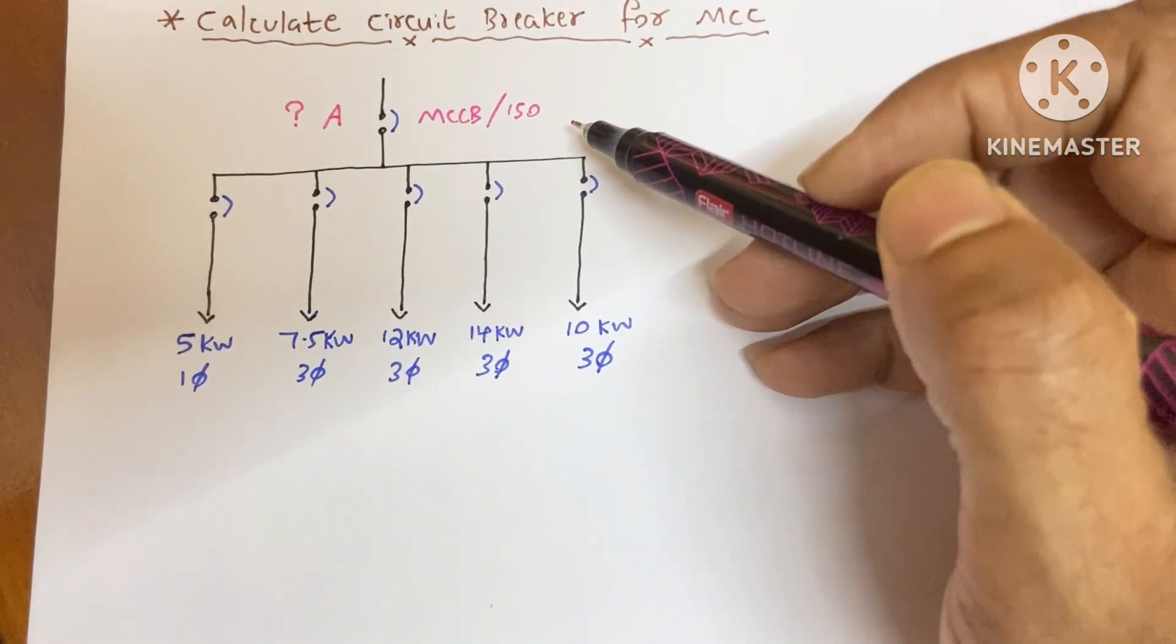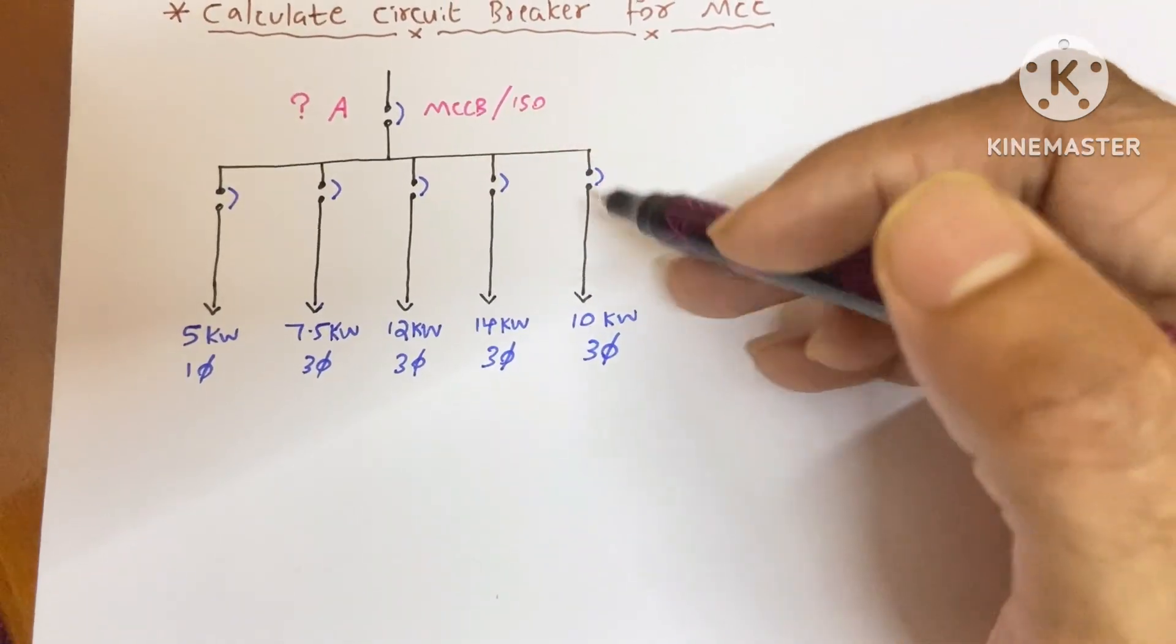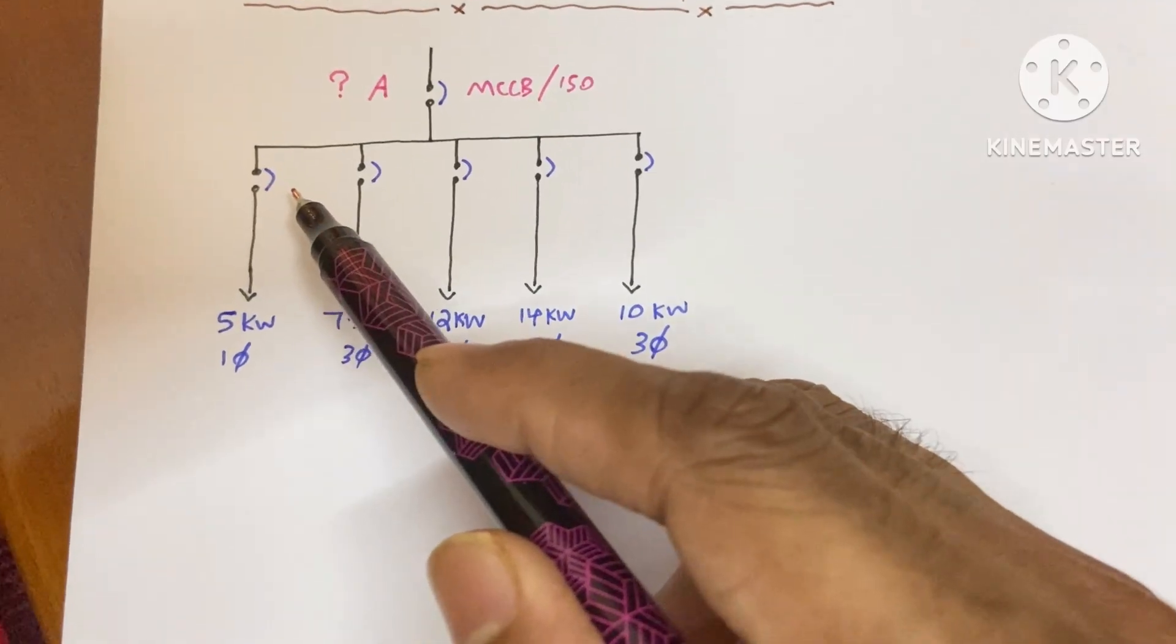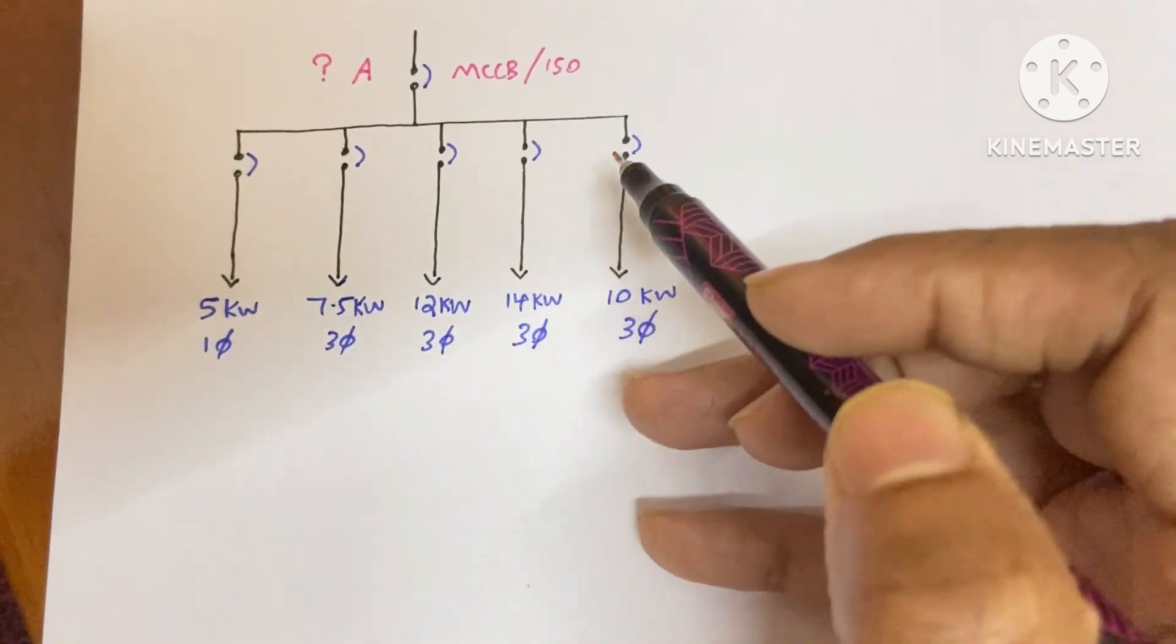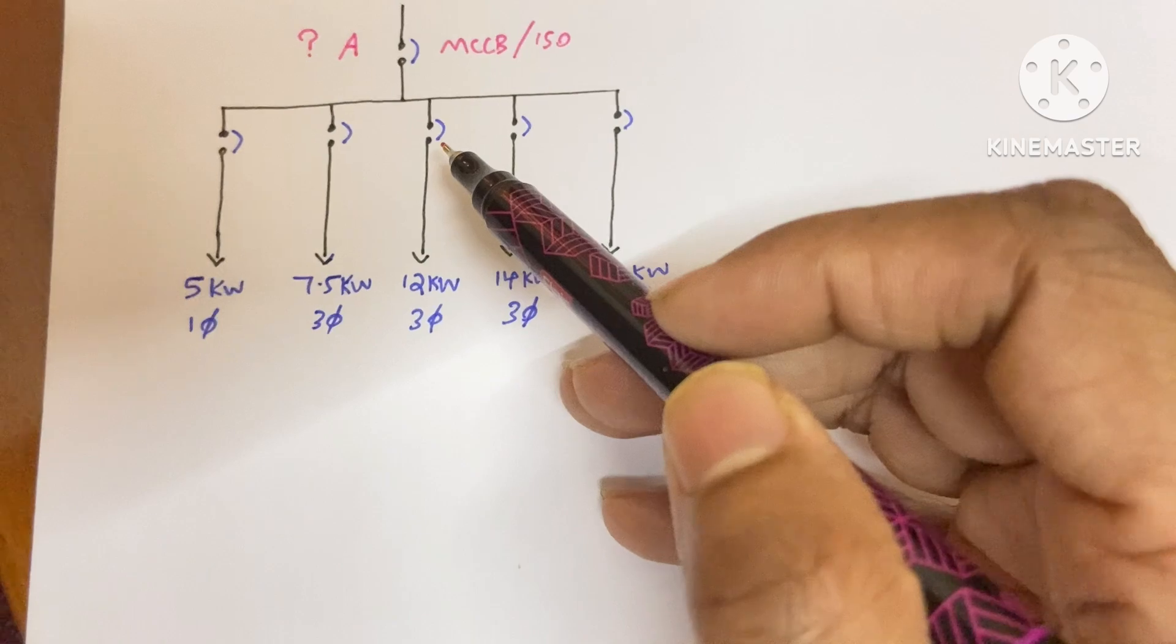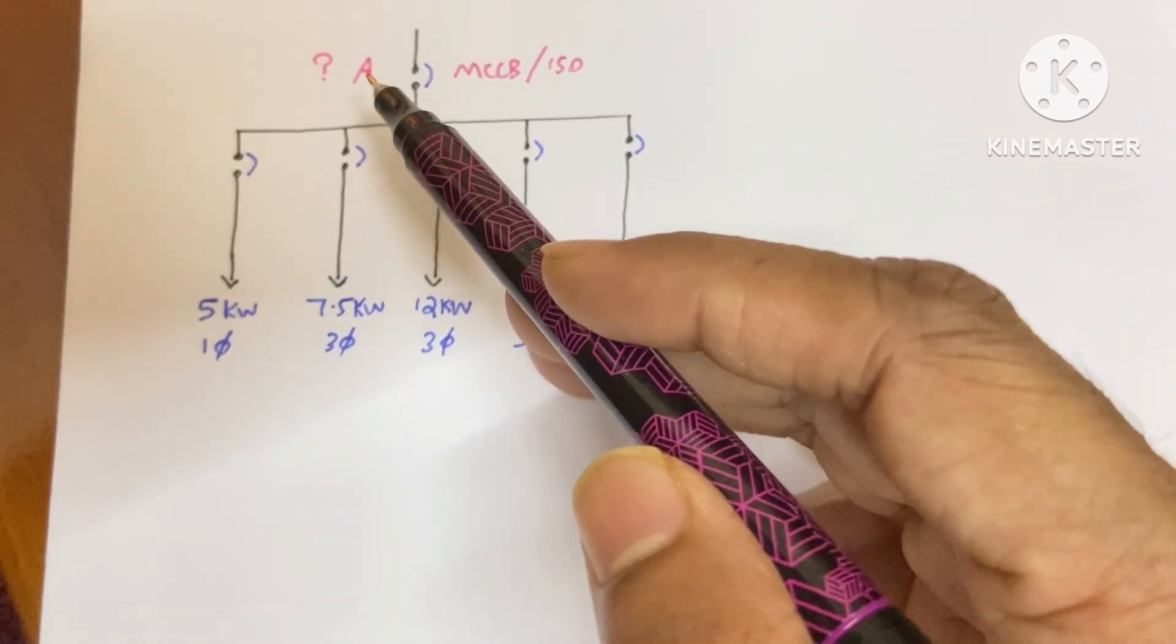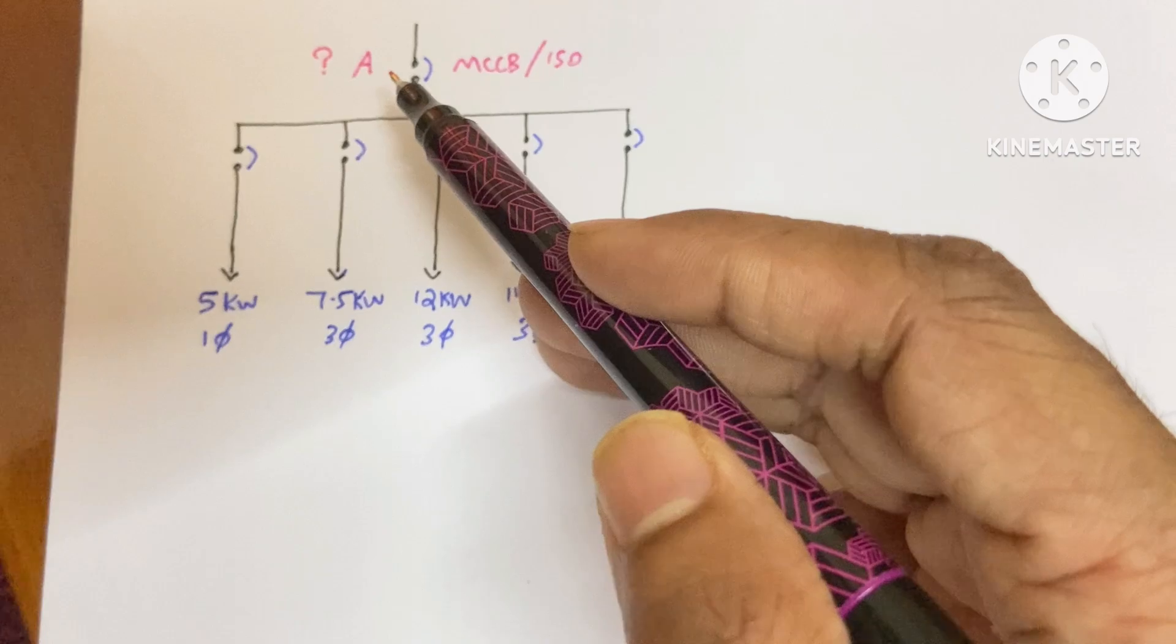According to UAE, an isolator would be used as an incomer for an MCC. These are the MCCBs of the outgoing loads, but I did not mention any breaker rating because my intention is to find out the size of only the incoming circuit breaker.